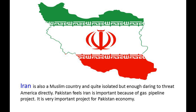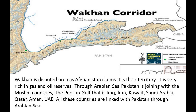To the southwest, Pakistan has a common border with the Islamic Republic of Iran. Iran is also a Muslim country and is quite isolated but daring enough to directly challenge America. Pakistan considers Iran important because of the gas pipeline project, which is a very important project for Pakistan. There is also the short border of Wuhan, a disputed area, as Afghanistan claims it as their territory, and it is very rich in gas and oil reserves.